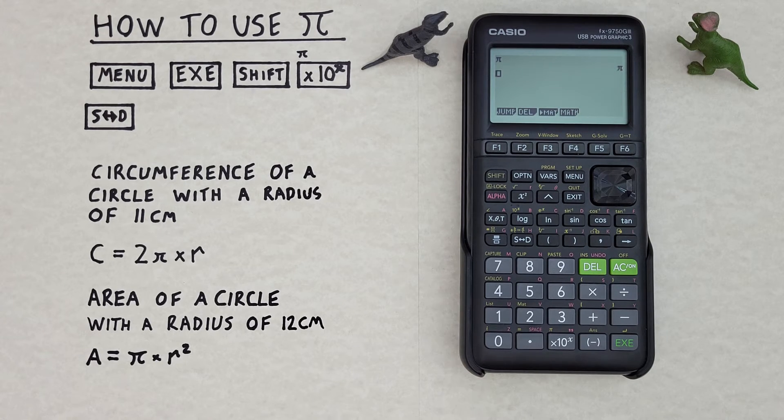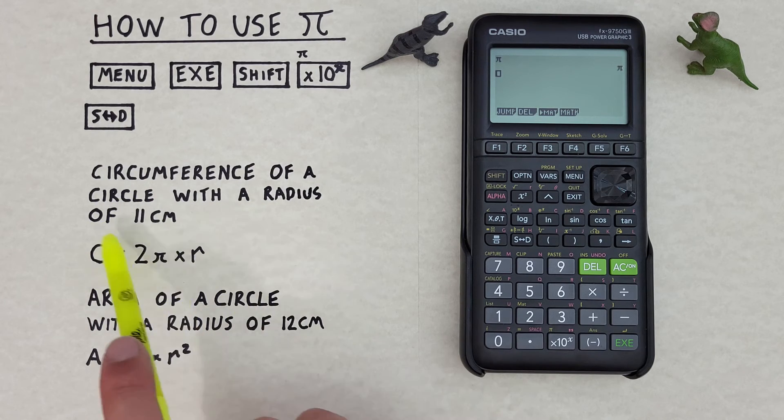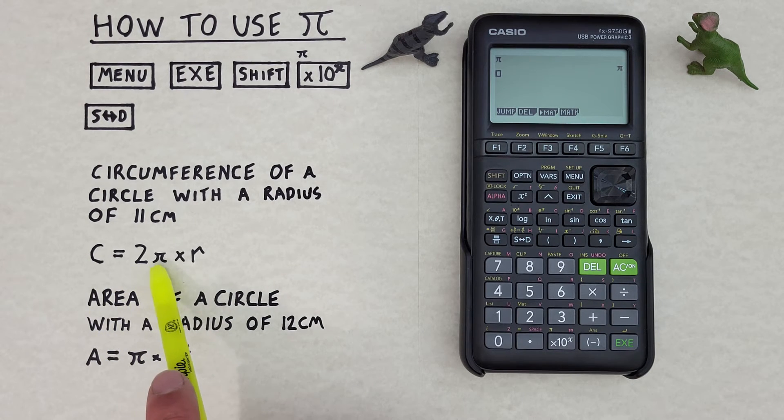For example, let's say we wanted to determine the circumference of a circle with a radius of 11 cm. To solve this, we use the formula circumference is equal to 2 Pi times R.